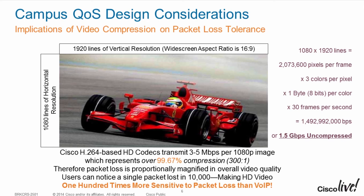For voice over IP, we can conceal the loss of a single packet using packet loss concealment algorithms, which play out the last audio sample. With typically 50 packets per second of audio — one sample every 20 milliseconds — if you lose one packet, you just play the previous 20 milliseconds and that loss is concealed. The target for voice over IP is no more than 1% packet loss. With video over IP, particularly high-definition video, even one packet loss in 10,000 is noticeable, and we cannot conceal that loss from the end user.